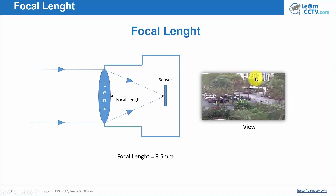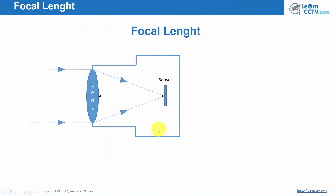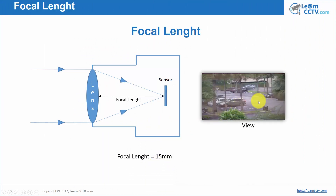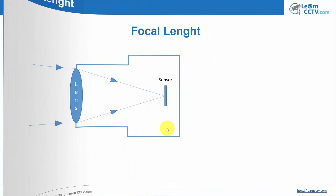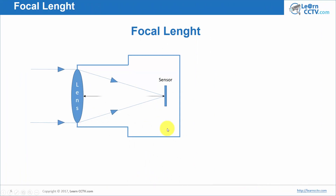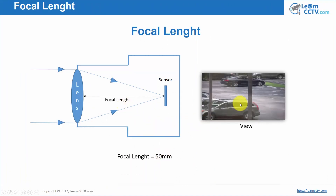I see part of the building but I have the car closer. Now with a focal length of 50 millimeters, I have the car pretty close — I can see much, much better, but no sky and no building anymore.